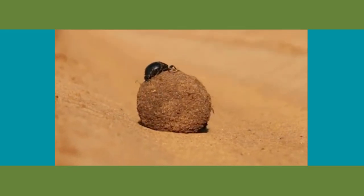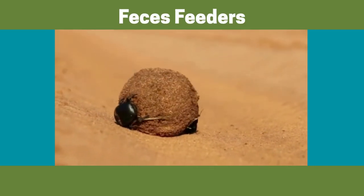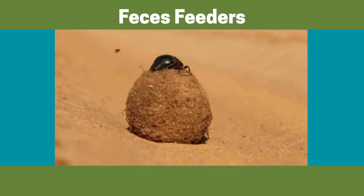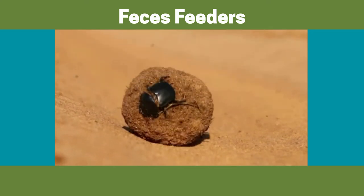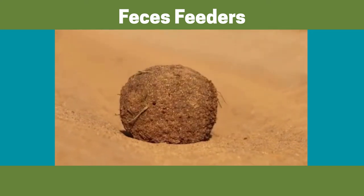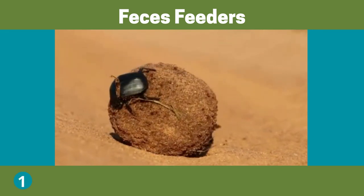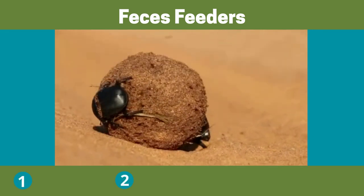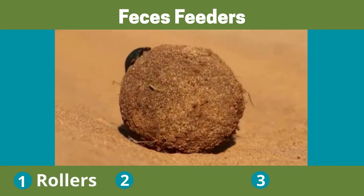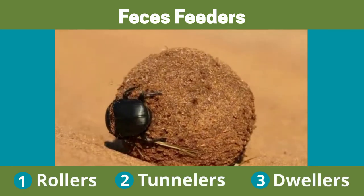The last type of decomposer insect is attracted to poop, where it will lay its eggs and the larvae will feed on the feces. The most iconic example of this is the dung beetle, which does one of three things with poop depending on the species: it rolls it into a ball, buries it underground in tunnels, or lives in it.